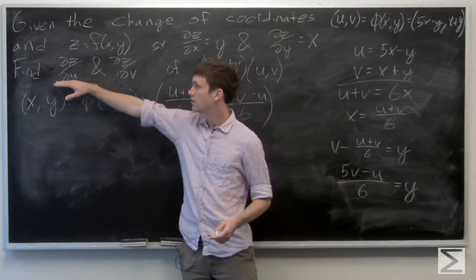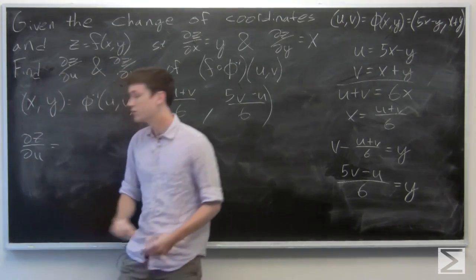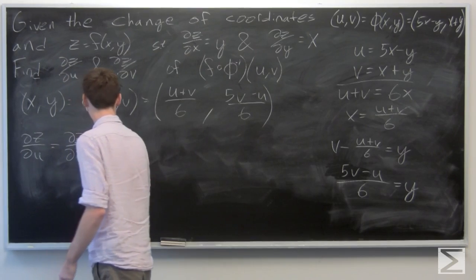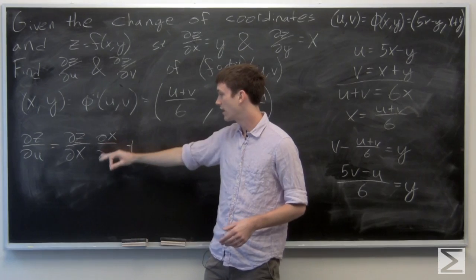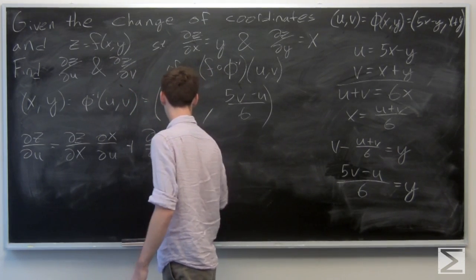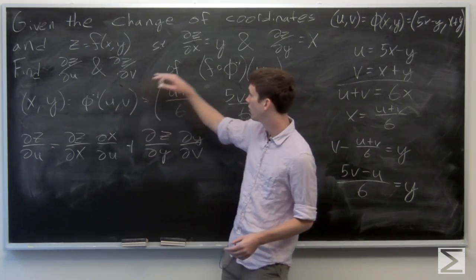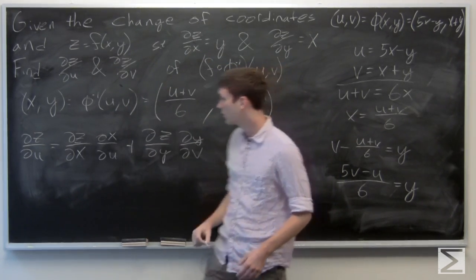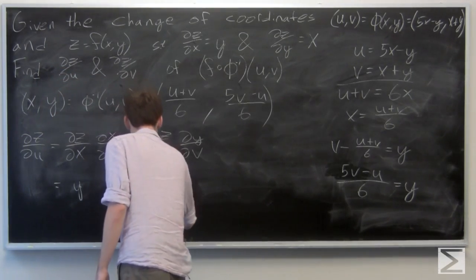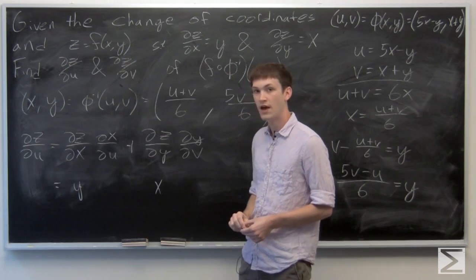Now we want to find the partial derivative of z with respect to u. By the chain rule, the partial derivative of z with respect to u equals the partial derivative of z with respect to x times the partial derivative of x with respect to u, plus the partial derivative of z with respect to y times the partial derivative of y with respect to u. The partial derivative of x with respect to u is 1/6.